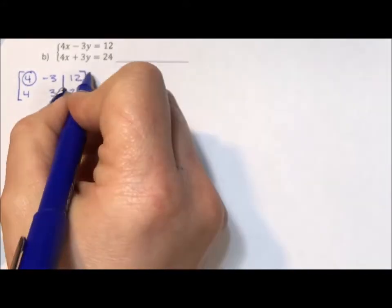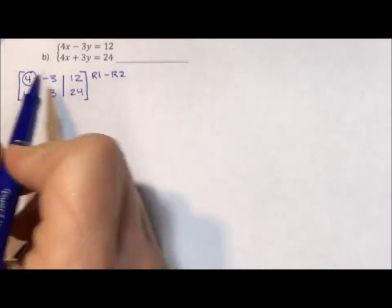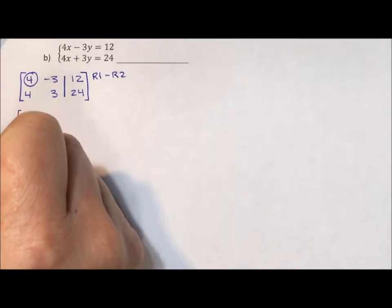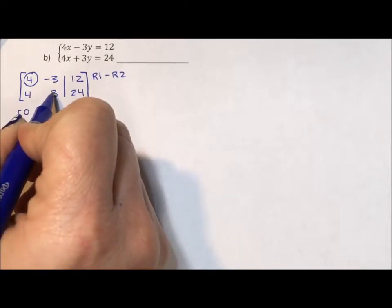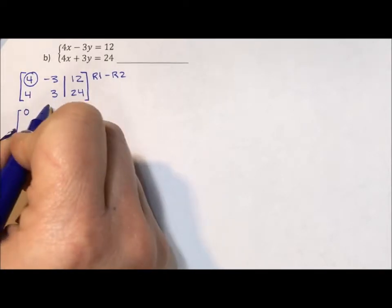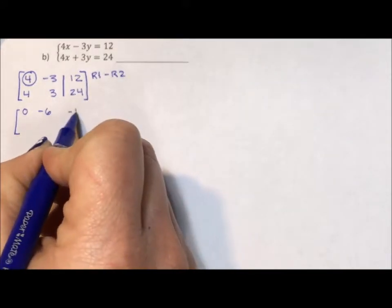So if I do this and say row 1 minus row 2, I often pull things out, but row 1 and row 2 are already written so nicely. 4 minus 4 is 0, negative 3 minus 3 is negative 6, 12 minus 24 is negative 12.